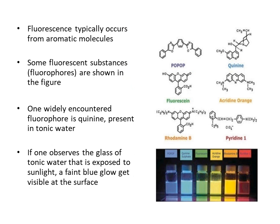In this slide, chemical structures of different compounds are shown together with solutions of these compounds. When the solutions are irradiated by sunlight, they appear in different colors. Looking at their chemical structures, we can conclude that fluorescence typically occurs from aromatic molecules — benzene is common in all these chemical compounds.